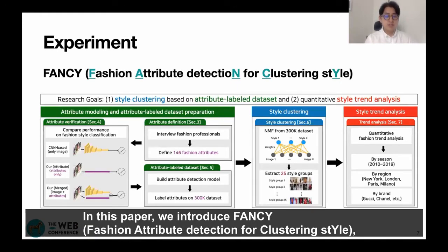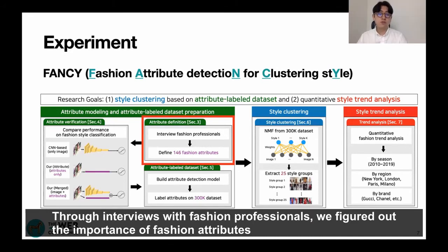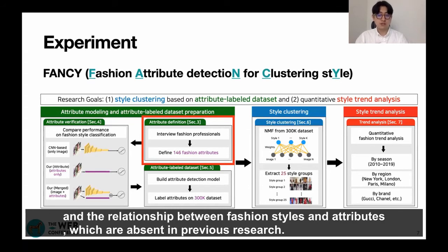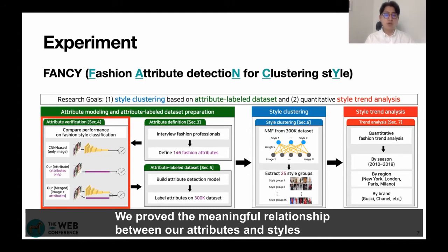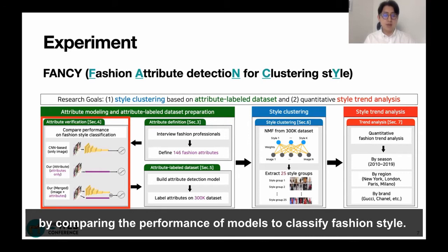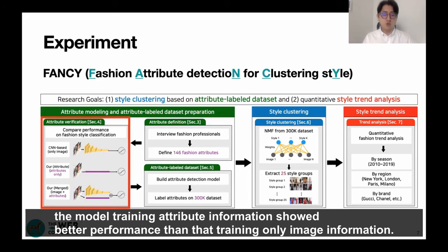In this paper, we introduce FANCY — a fashion attribute detection framework for style analysis — a human-centered deep learning-based framework. Through interviews with fashion professionals, we figured out the importance of fashion attributes and the relationship between fashion styles and attributes, which were absent in previous research. Through collaborating with professionals, we defined 146 attributes and proved the meaningful relation between our attributes and style by comparing the performance of models classifying fashion style. Specifically, we proved that the model trained with attribute information showed better performance than training on image information only.